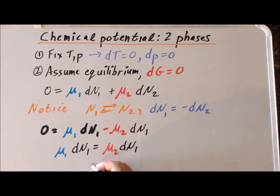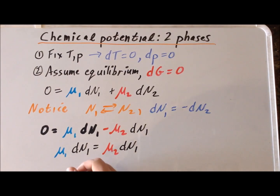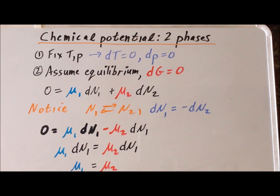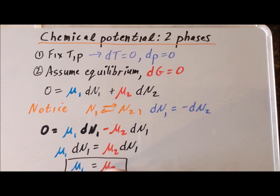Our conclusion is that, so long as we are at equilibrium, the chemical potential of one is going to be exactly equal to the chemical potential of two. We can use this condition as an equivalent condition for equilibrium for a two-phase system. Thank you very much for your attention.